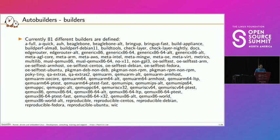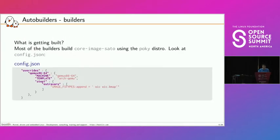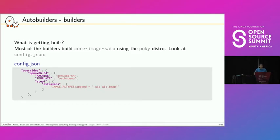So, builders. What kind of builds can we do? We currently have 81 different builders defined. Most builders will build core-image-sato, which is a fairly large image using Poky — designed to build as much as possible and extend build coverage. You can look at config.json to see exactly what a particular builder does. For example, qemu-x86-64 builds for the QEMU x86-64 machine and uses a template.